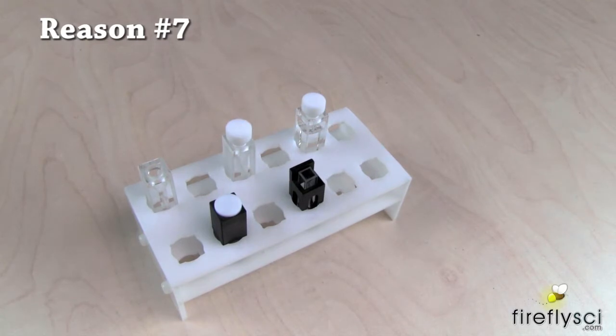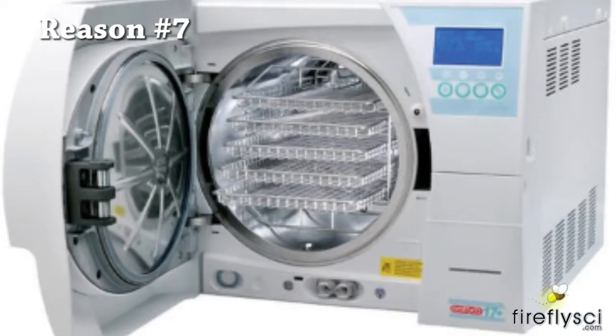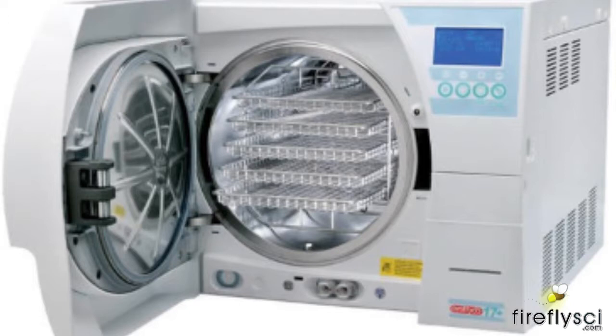Number seven, autoclavable. An autoclave is a pressure chamber that is used to sterilize equipment. We all know how important it is to make sure your cuvettes are squeaky clean. The cell rack is safe to use in a steam autoclave at 121 degrees Celsius, 249 Fahrenheit.